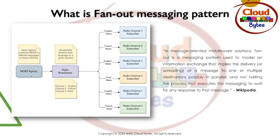I have drawn this picture to give you a real-life example. You can see a box saying News Agency. The News Agency is publishing news in different languages on three different channels. Then you have a broadcaster of the news. The broadcaster is streaming the news in each language to a given channel. Channel 1 is an English channel, Channel 2 is a French channel, Channel 3 is Hindi. On the right side, you can see subscribers. There is a number one subscriber here, and this subscriber is subscribing or listening to Channel 1.